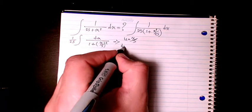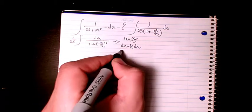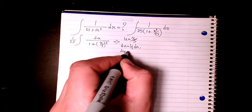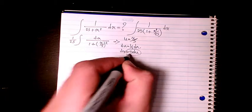So du will be 1 over 5 dx, or dx will be equal to 5 du. So instead of dx, I write 5 du.